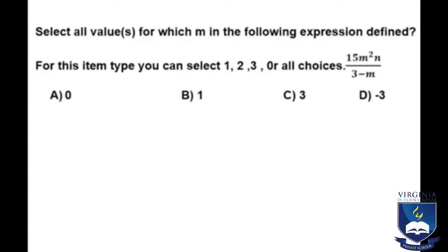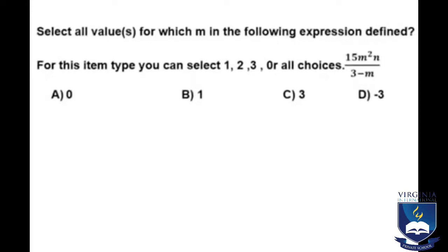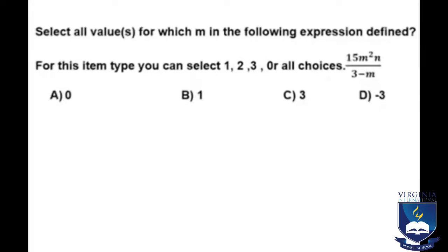Select all values for which M in the following expression is defined. For this item type, you can select 1, 2, 3, or all choices. The expression is (15M²N)/(3-M). A is 0, B is 1, C is 3, D is -3. As you probably know, this expression is a rational expression, so it will be defined when the denominator is not equal to zero. I'm going to focus on 3-M.